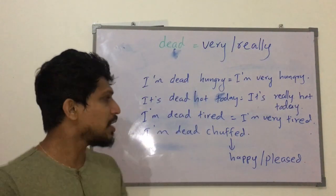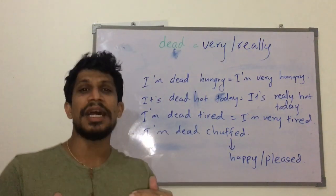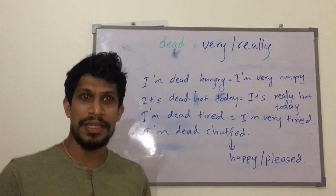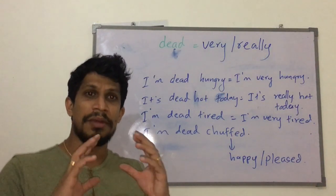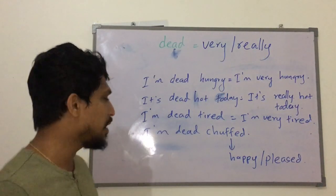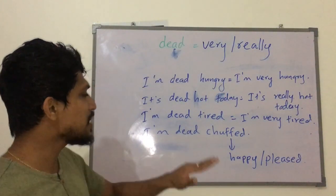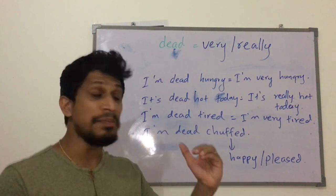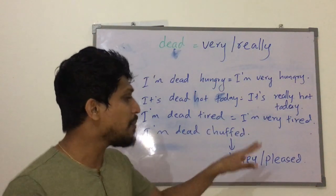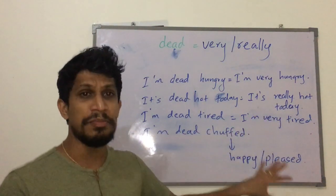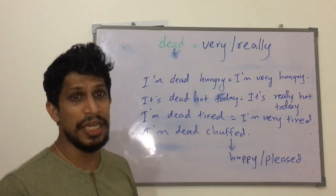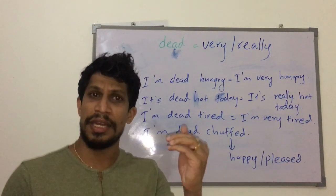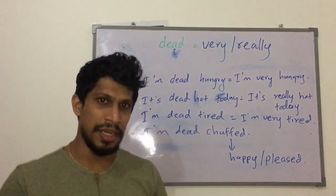Look at the third example: I am dead tired. It means I am very tired. Look at the last example: I am dead chub. The word chub means happy or pleased. Chub means you are happy. We can say I am dead chub.